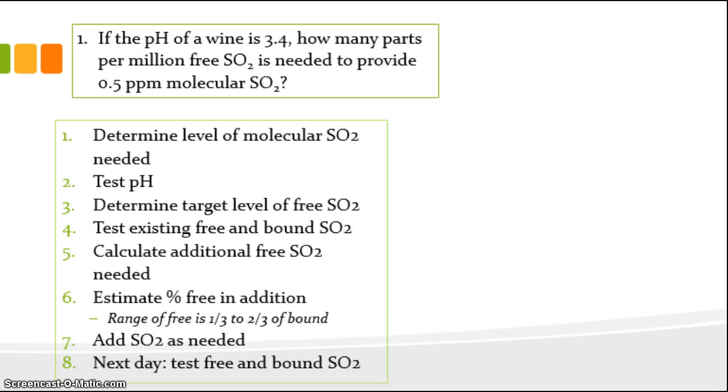So let's get right into problem number one. If the pH of a wine is 3.4, how many parts per million free SO2 is needed to provide 0.5 parts per million molecular SO2? So let's go through the steps.